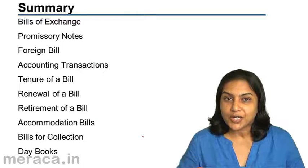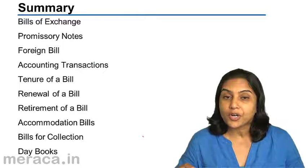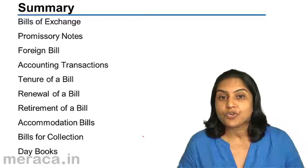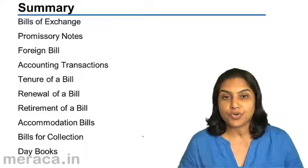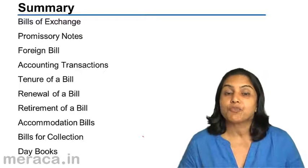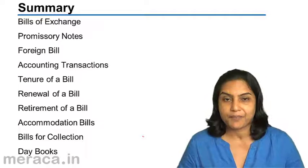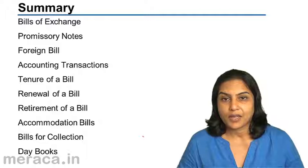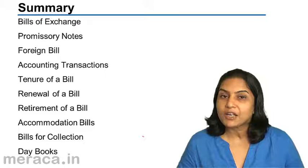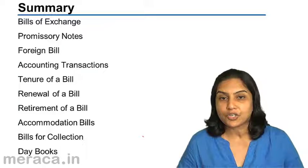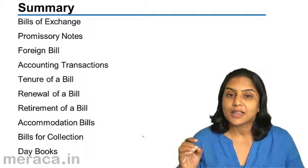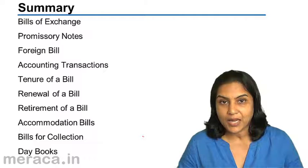The bill of exchange contained an order to Y, so Y was the drawee — it was drawn on Y. Y is the person who is required to make the payment; therefore he is the payer. It is possible in a bill of exchange to have a third party besides the drawer and the drawee — that is, a third person could be the payee.